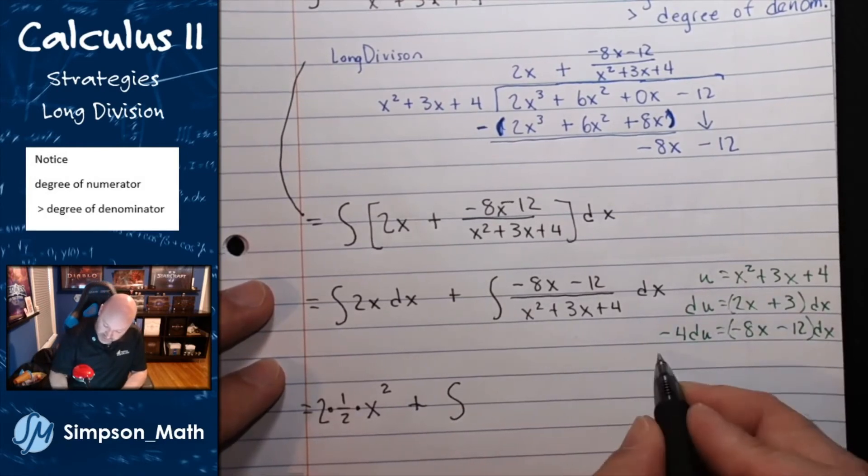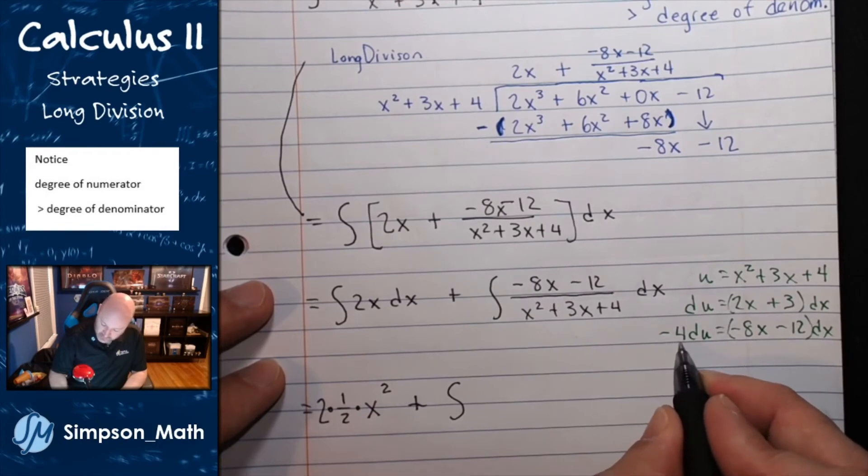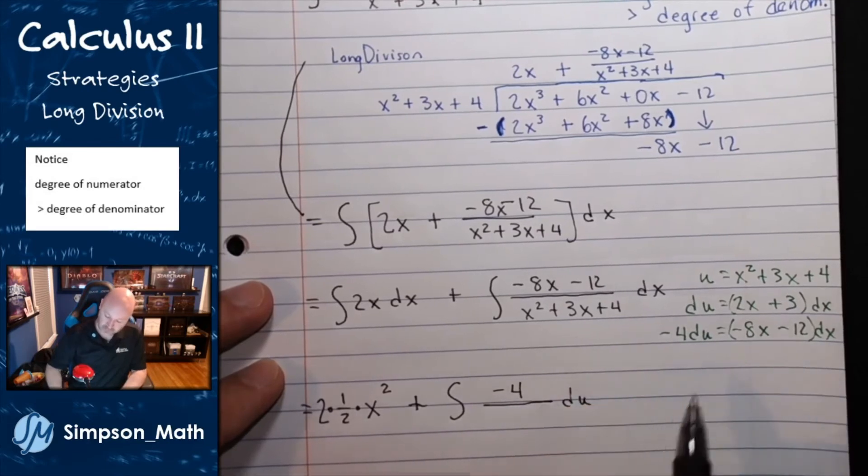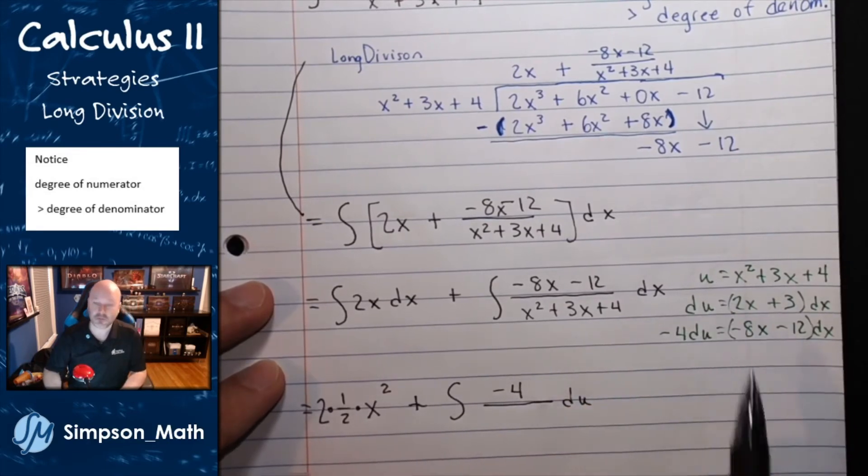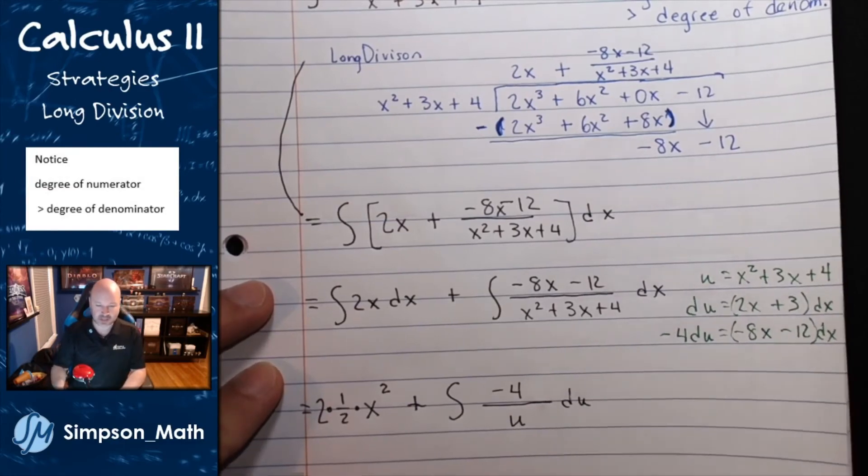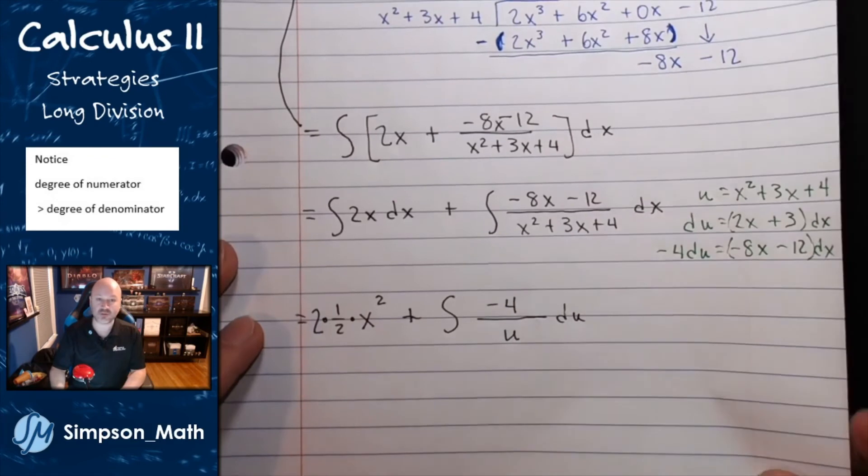I'm going to rewrite this integral in terms of u. So, I'm going to have negative 4 du over u. Perfect. This is just u to the negative first. But, that means I'm going to have a natural log.